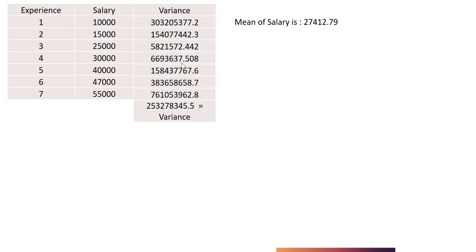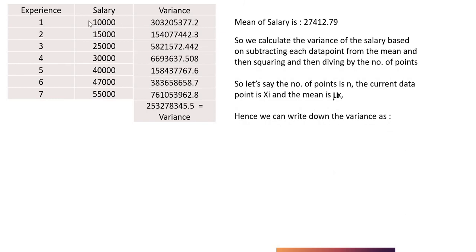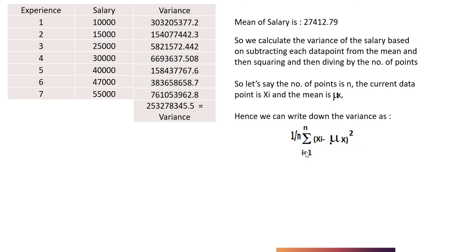Now, these are the squared distances from the mean — each and every data point's distance from the mean is squared. Once this is done, the variance is calculated based on the average of each and every distance. So we can write down the variance as: where the number of data points is x of i — i is the data point number. So for 10,000 it is x of 1, for 15,000 it is x of 2, for 25,000 it is x of 3, till 55,000 which is x of 7. And mu of x is the mean of the salary dataset. So we can write down the variance formula as: 1 over n, summation from i equals 1 to n, of (x_i minus mu_x) squared. Here n is the number of data points.